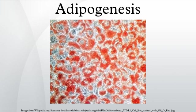Adipogenesis is the process of cell differentiation by which preadipocytes become adipocytes. Adipogenesis has been one of the most intensively studied models of cellular differentiation.